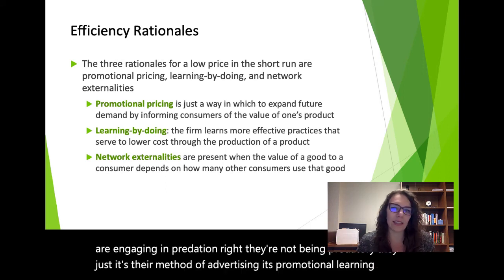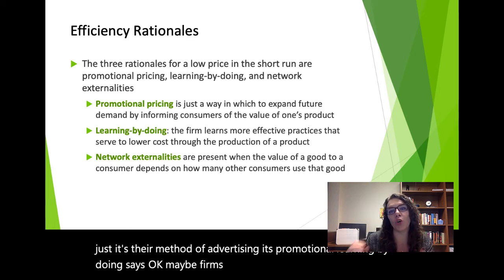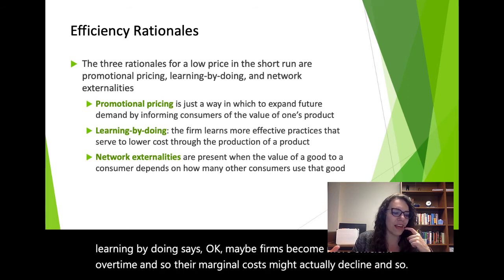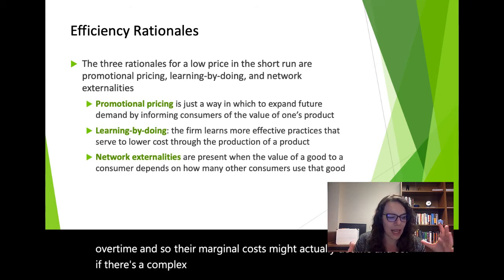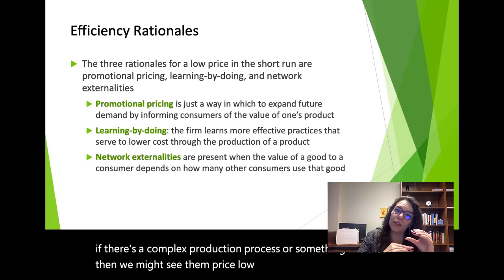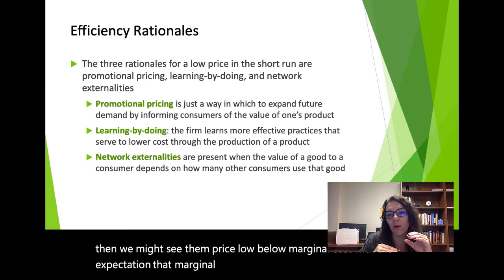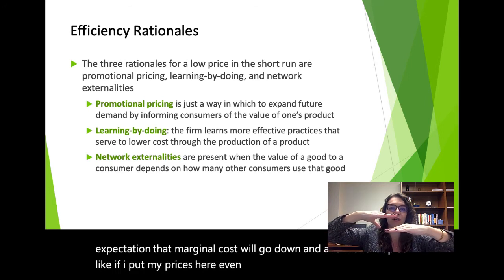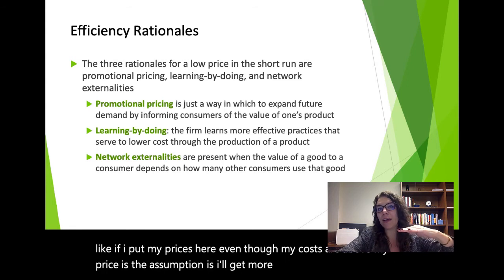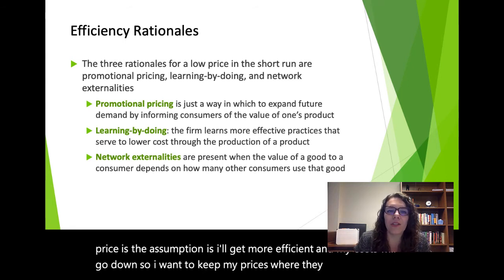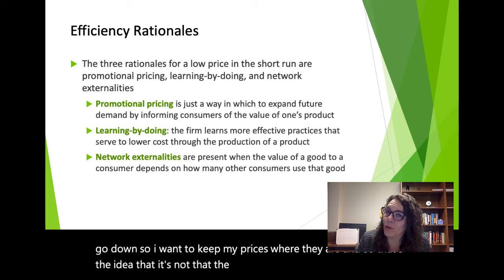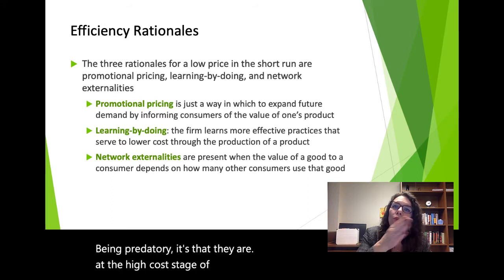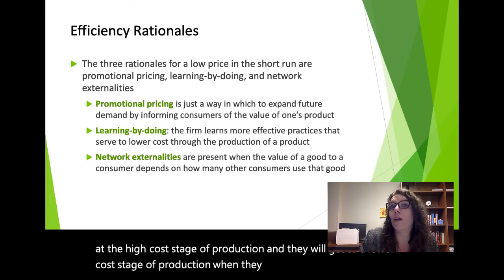Learning by doing says firms become more efficient over time, so their marginal costs might actually decline. If there's a complex production process, a firm might price below marginal cost with the expectation that marginal cost will go down. They're not being predatory — they're at a high-cost stage of production and will get to a lower-cost stage as they get more efficient.